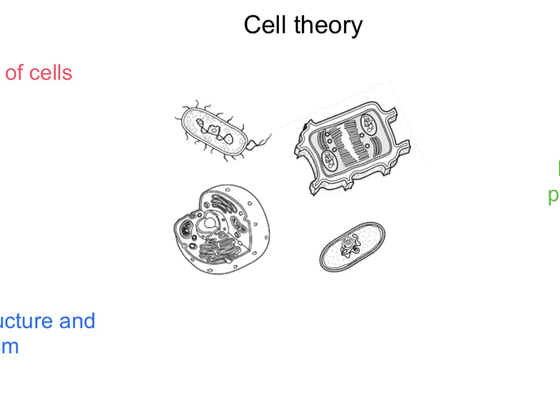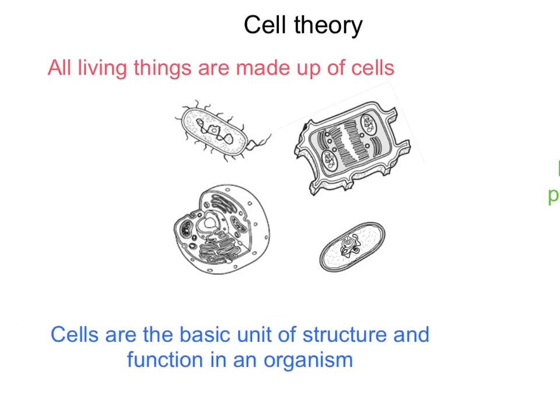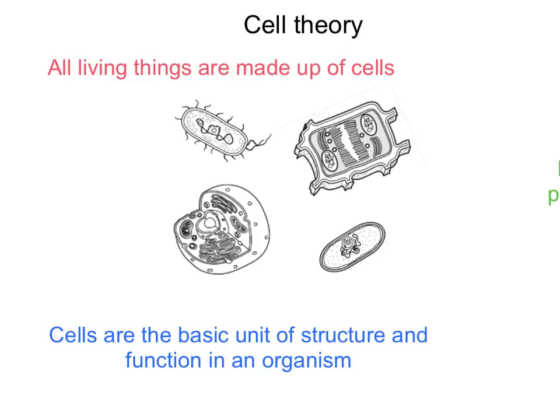Now that we've established the characteristics of living things, let's talk about cell theory. Cell theory revolves around the idea that all things are made up of cells — that's the first component. All living things are made up of cells because cells are the smallest unit of living things. The portions of a cell are not living on their own. The second part of cell theory states that cells are the basic unit of structure and function in an organism.